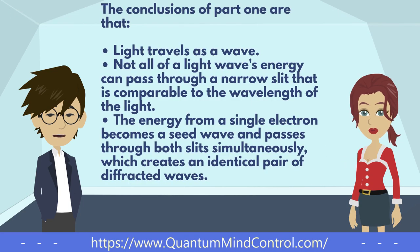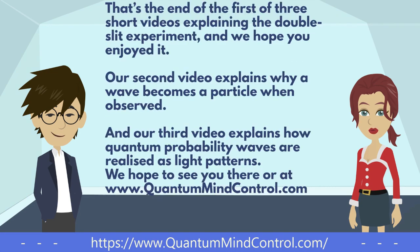The conclusions of part one are that light travels as a wave; that not all of a light wave's energy can pass through a narrow slit that is comparable to the wavelength of the light; and that the energy from a single electron becomes a seed wave and passes through both slits simultaneously, which creates an identical pair of diffracted waves. That's the end of the first of three short videos explaining the double-slit experiment. Our second video explains why a wave becomes a particle when observed, and our third video explains how quantum probability waves are realized as light patterns. We hope to see you at www.quantummindcontrol.com.